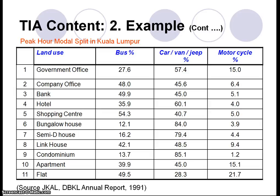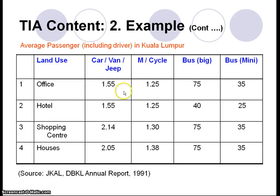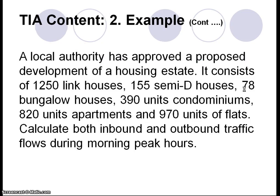Based on a survey in Kuala Lumpur — used here because we don't have a modal split survey for Ipoh — for government office, typically 27.6% travel by bus and 57% by car. We don't have LRT in Ipoh so we use figures for areas without LRT. The average vehicle occupancy is 1.55 persons per car, 1.25 per motorcycle, 7.75 per bus, and 6.35 per minibus. We use these figures to calculate the number of vehicles.